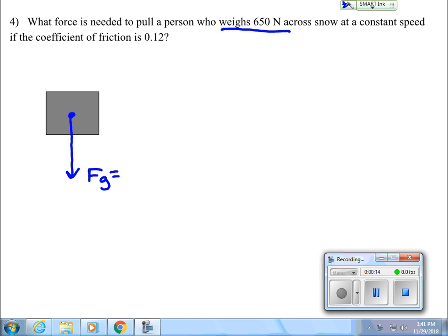The force of gravity, which is the weight, is 650 Newtons. This is equivalent to the normal force from the ground. It's just going in the opposite direction. I didn't use a sign because I have arrows to indicate directions.